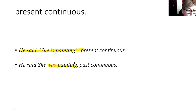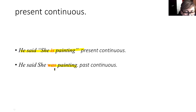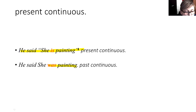Present continuous changes to past continuous. The only thing that changes is our 'to be' verb — we change from present to past. So 'he is painting' or 'she is painting' becomes 'he said she was painting.'